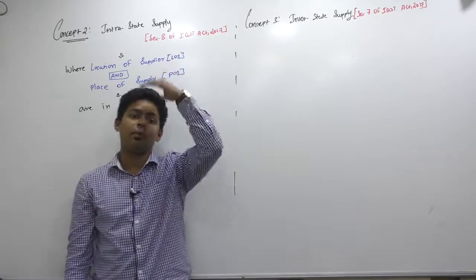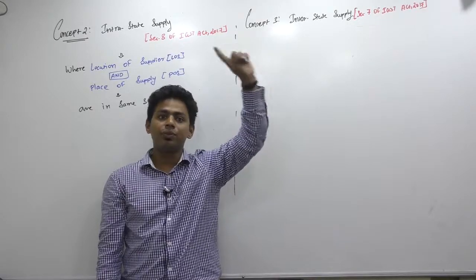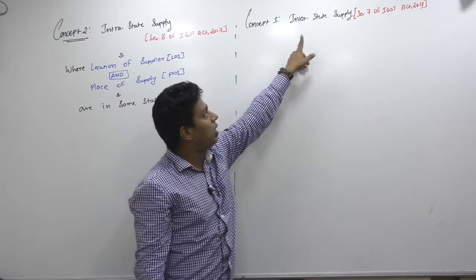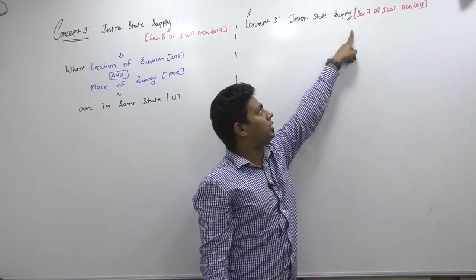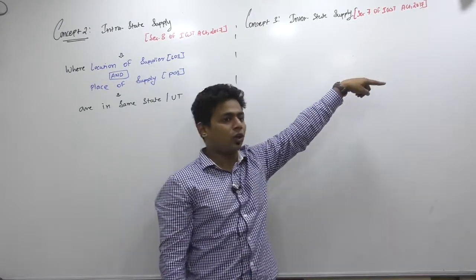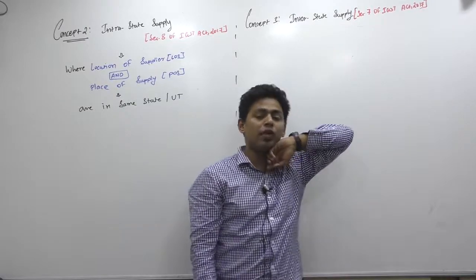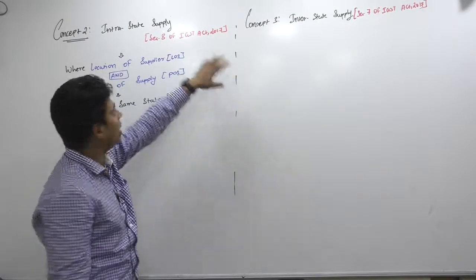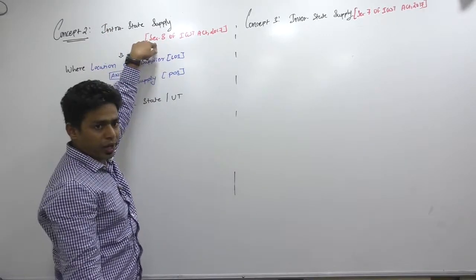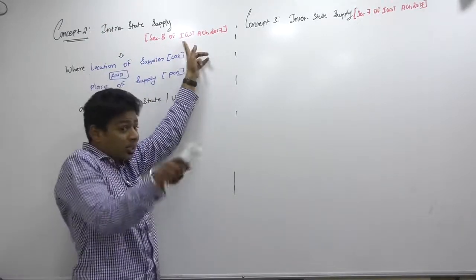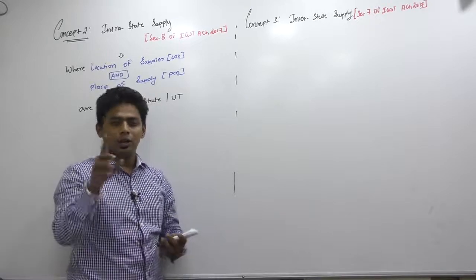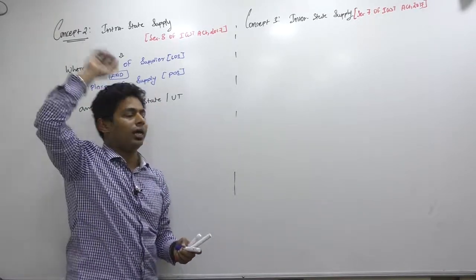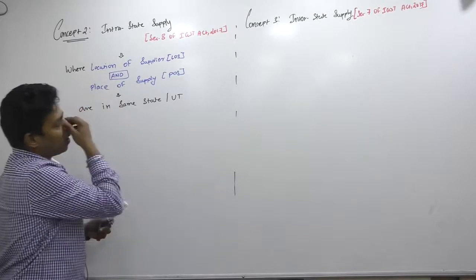It is defined where interstate has been defined. And interstate chargeability will come under which act? IGST. Therefore, here you can see interstate supply defined under Section 7 of IGST Act—not CGST, Section 7 of IGST Act 2017. There itself, after defining what is interstate, they had defined intrastate. So this is Section 8 of IGST Act. Will you keep it in mind? Because it is not in CGST, it is in IGST Act.